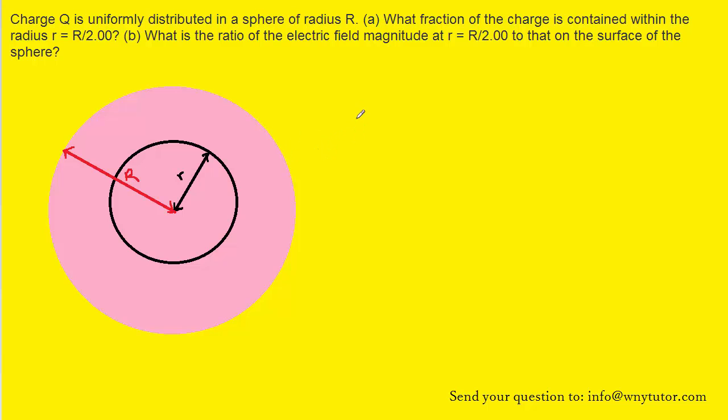To do that, we can set up a proportion because we know that the charge is uniformly distributed. For instance, we can say that the charge that is contained within the sphere whose radius is r divided by the total charge, which would be the charge contained within the sphere whose radius is uppercase R,